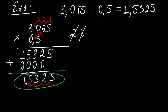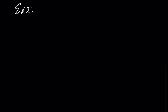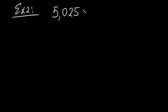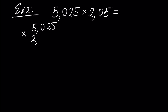Let's give another example. Example number two: let's multiply the number 5.025 by the number 202.05. Let's rewrite it: 5.025 times 202.05.